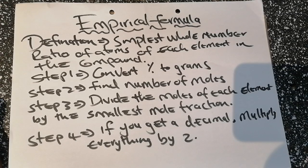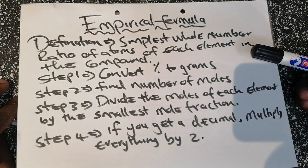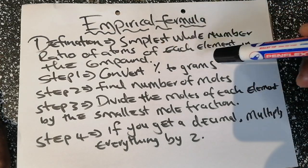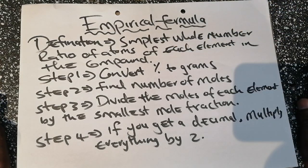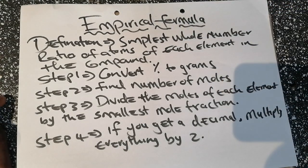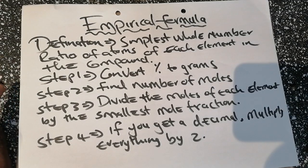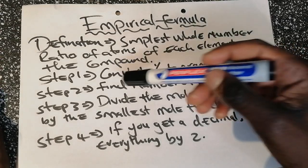I wrote four steps that we need to follow in order to get the empirical formula. Step one: if we're given the composition of the substance in terms of percentages, we need to convert the percentages to grams. Percentages add up to 100, therefore it's equivalent to 100 grams — meaning each percentage is equivalent to each gram.